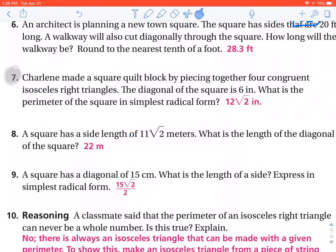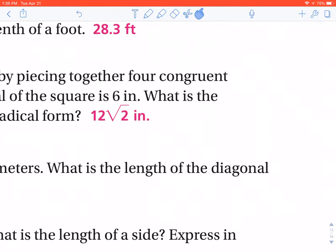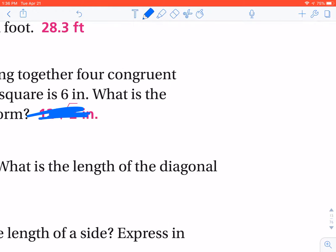The first one says, Charlene made a square quilt block by piecing together four congruent isosceles right triangles. The diagonal of the square is 6 inches. What is the perimeter of the square in simplest radical form? As I look at this, I think this is one that I perhaps forgot to change the answer key for you on Google Classroom. So if you're confused why it's still radical 2, that will not be our answer. So as we go through this, they put a lot of information in there about it being four congruent and isosceles triangles. The bottom line is, the diagonal is 6 inches. And if it's a square and you cut the square in half, you create 45, 45, 90 triangles.